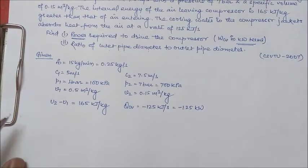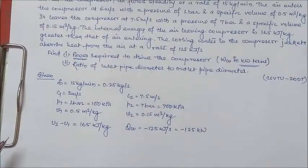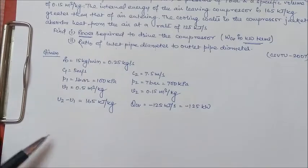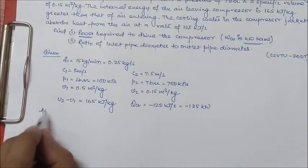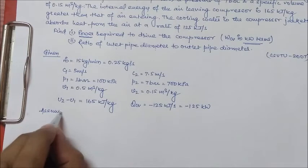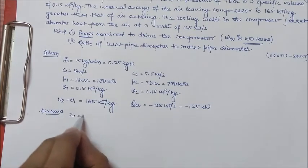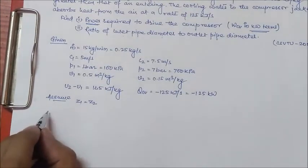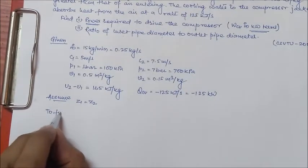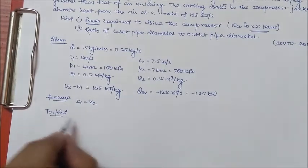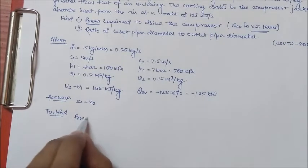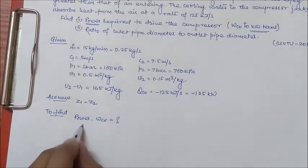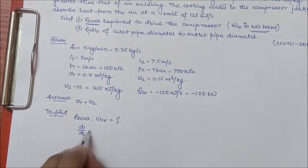In this question there is nothing mentioned about potential energy change, so we will assume Z1 equal to Z2. What we have to find is first the power, that is WCV, and second D1 by D2.